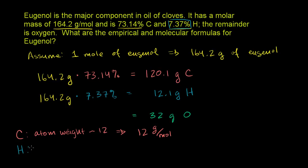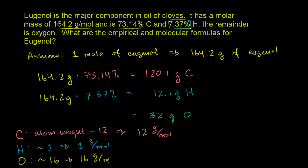Hydrogen, whether you take a single isotope or the weighted average, has an atomic weight very close to 1 — so hydrogen's molar mass is 1 gram per mole. And oxygen is approximately 16 atomic mass units, so its molar mass is 16 grams per mole. Just remember: carbon is 12, hydrogen is 1, oxygen is 16.